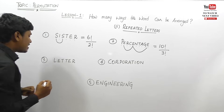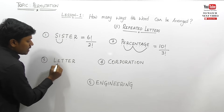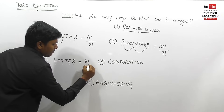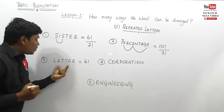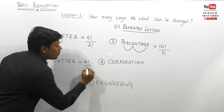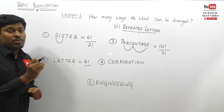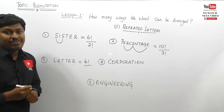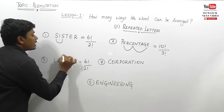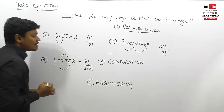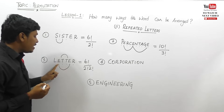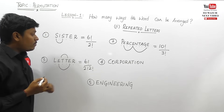Third example: how many ways can the word LETTER be arranged? Count the letters — one, two, three, four, five, six — so this is six factorial. Here, E is repeated two times and T is repeated two times. So the answer is six factorial divided by two factorial and two factorial — the first two factorial is for E and the second two factorial is for T.